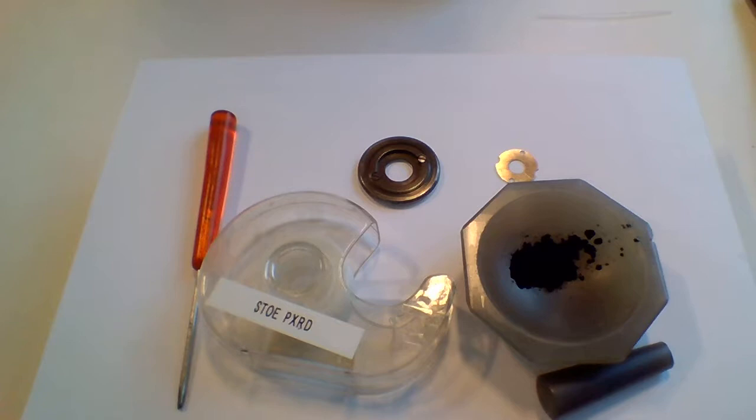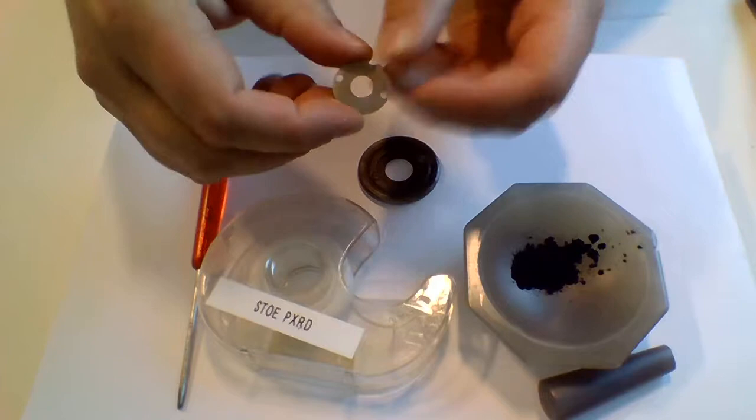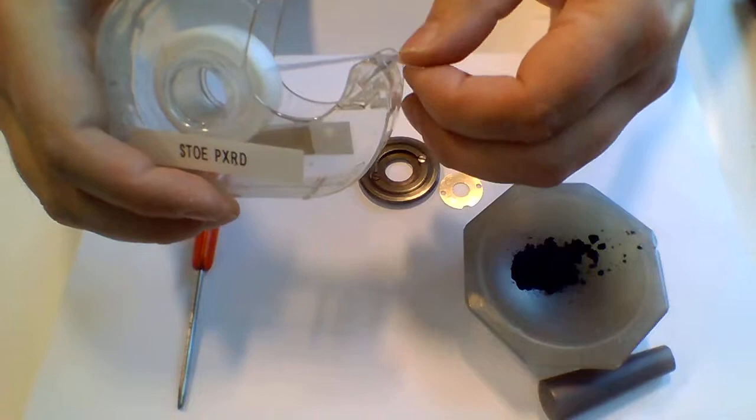In this short video I'll show you how to prepare a sample for Stoei. Stoei is using transmission geometry. The sample itself will be mounted on this small ring using simple sticky tape.